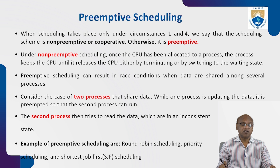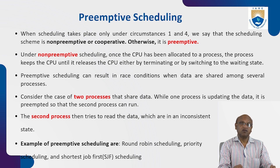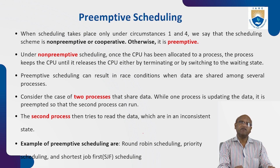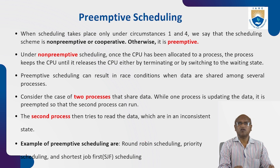When scheduling takes place only under circumstances one and four, the scheduling scheme is non-preemptive or cooperative; otherwise it is preemptive. Preemptive means forcefully stopping the CPU and allocating some other job, keeping the previous job in the queue. Soon after the high-priority job is completed, the previous job is brought back to the CPU.